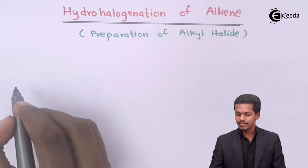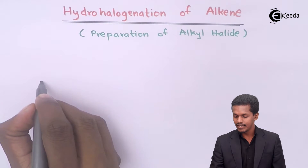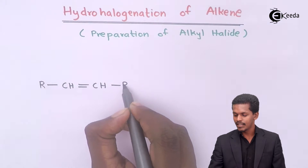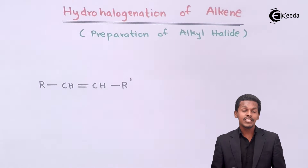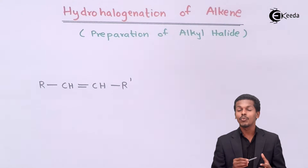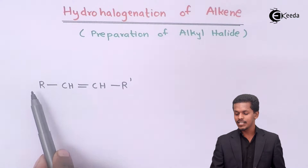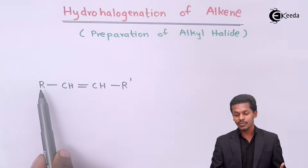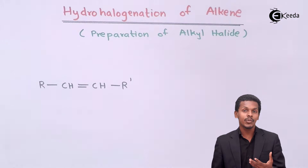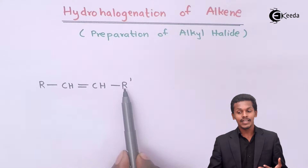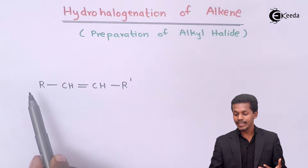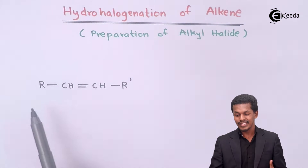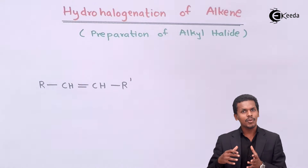Suppose if we have an alkene — for the general addition, suppose we have an alkene that is RCH=CHR'. This could be a symmetrical alkene if R and R' are the same, for example both CH3. If R is C2H5 and R' is CH3, then it would be an unsymmetrical alkene. Similarly, if one is CH3 and the other is H, that would also be unsymmetrical. We will discuss that in detail later.